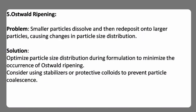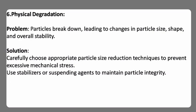Fifth, Ostwald ripening — smaller particles dissolve and then redeposit onto larger particles, causing changes in particle size distribution. Solution: optimize particle size distribution during formulation to minimize the occurrence of Ostwald ripening, and consider using stabilizers or protective colloids to prevent particle coalescence. Sixth, physical degradation — particles break down, leading to changes in particle size, shape, and overall stability. Solution: carefully choose appropriate particle size reduction techniques to prevent excessive mechanical stress, and use stabilizers or suspending agents to maintain particle integrity.